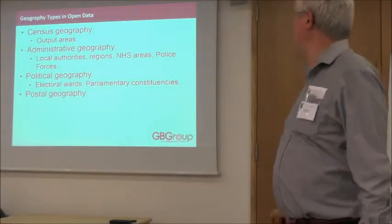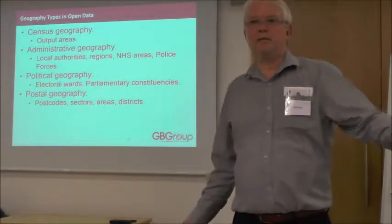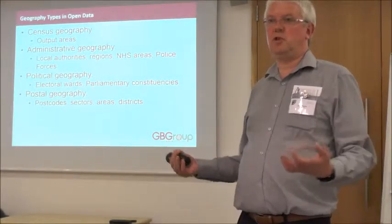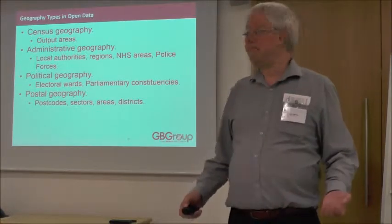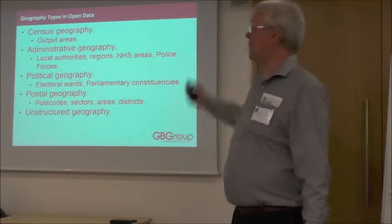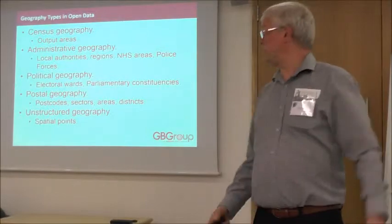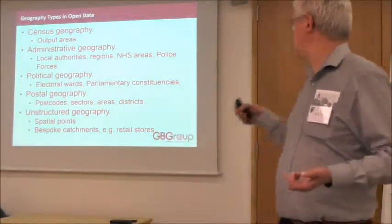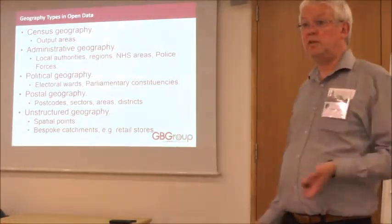Then you've got postal geography — the humble postcode — which has become ubiquitous. People use it in their sat-nav. Geodemographic tools like Experian Mosaic rely on postcodes. There's also unstructured geography with no structure — just a point where something happened. There's also bespoke catchment areas, so if you're a retailer you might have catchment areas that describe your retail stores.